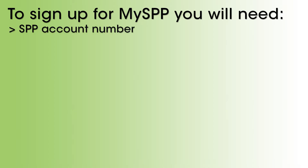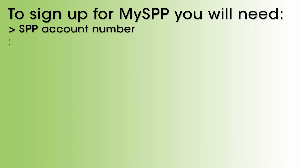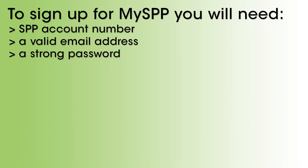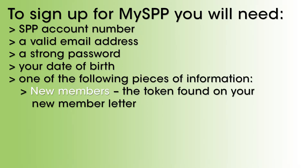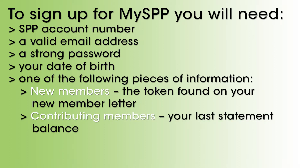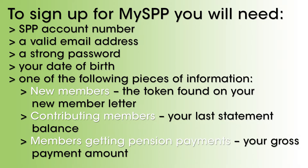If you would like to sign up for MySPP, you will need your SPP account number, a valid email address, a strong password, your date of birth, and one of the following pieces of information: new members — the token found on your new member letter; contributing members — your last member statement; members getting a pension payment — your gross pension amount.